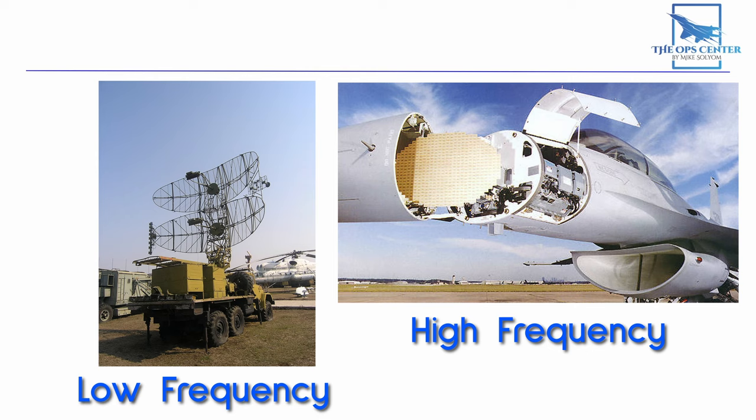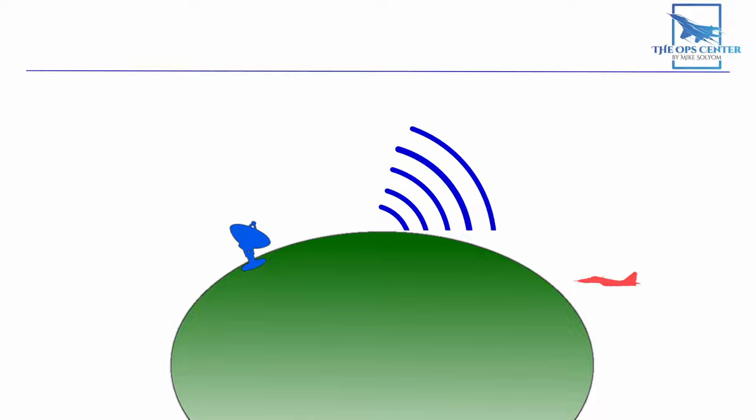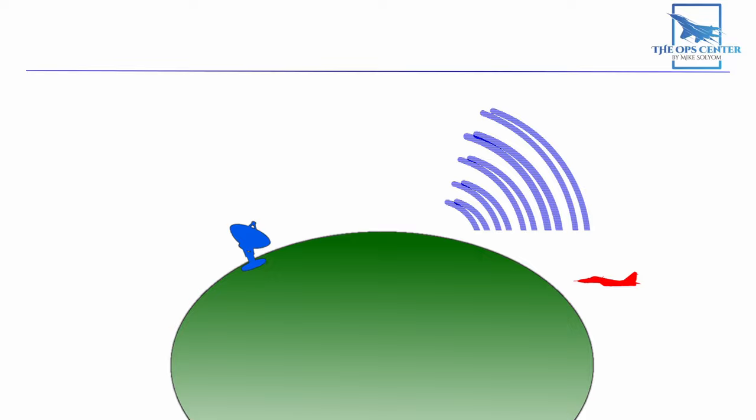But they aren't problem-free. High-frequency radars are stopped by obstacles like man-made structures and terrain. This means that after a certain distance, the curvature of the Earth actually blocks the radar signal. Let's take a look at an example of this.